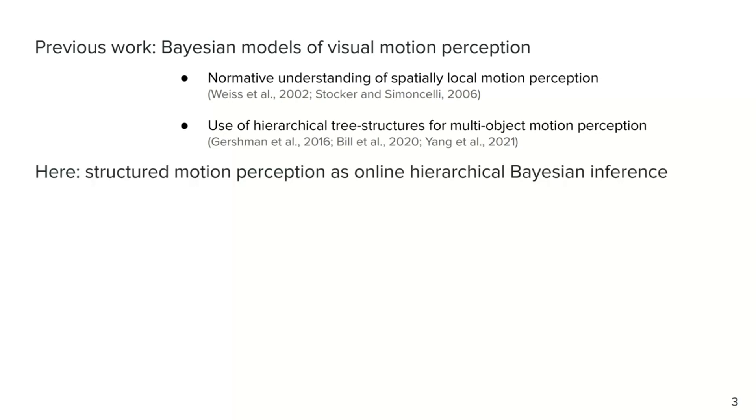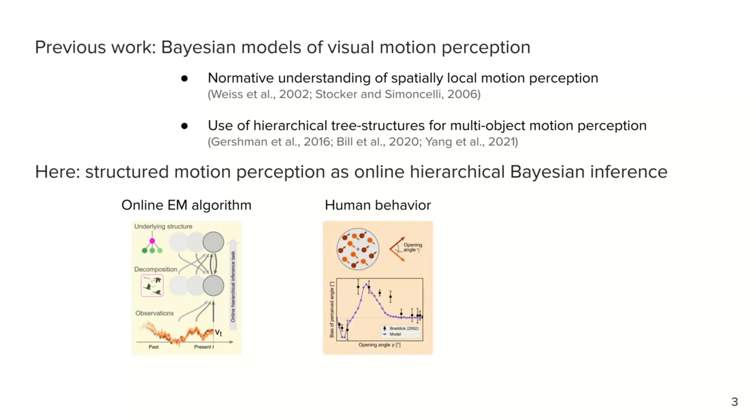Here we address how the perception of structured motion can be explained as online hierarchical inference. We define a generative model of structured motion and derive an online expectation maximization algorithm to perform inference in this model. We show how the algorithm can explain human percepts in a variety of tasks. And we devise a network model that implements the algorithm in neural circuits and that allows us to make testable predictions for experiments. Overall, we provide a unifying Bayesian description that ties together a normative theory of information processing with human psychophysics and a potential neural implementation.